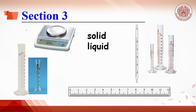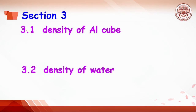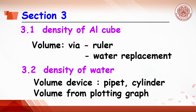Section 3 covers determination of density of solid and liquid, integrating significant figure calculations. This section is divided into two parts: the first involves determining the density of an aluminum cube using a ruler and water displacement, and the second involves determining the density of water in different ways.